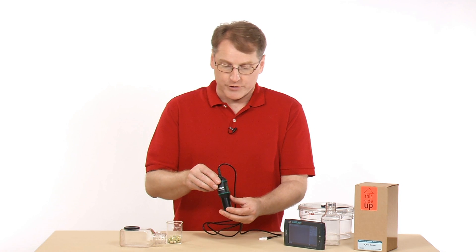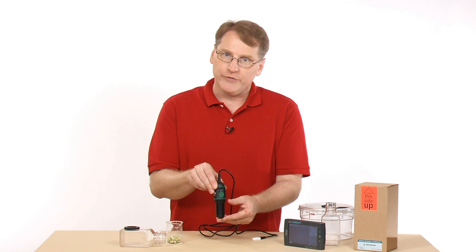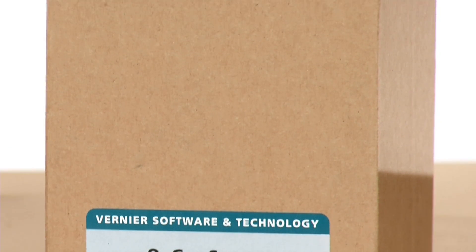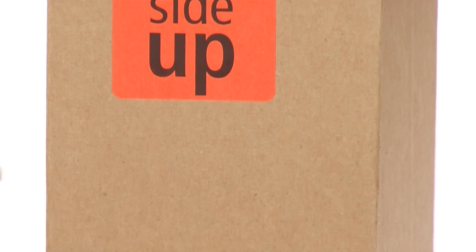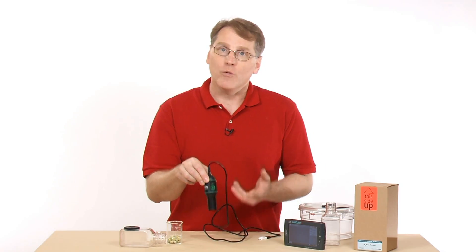One thing about this sensor is that you need to store it vertically. It comes in this box that says this side up, and the sensor is in the box in that orientation. And it's important that you do store it that way.